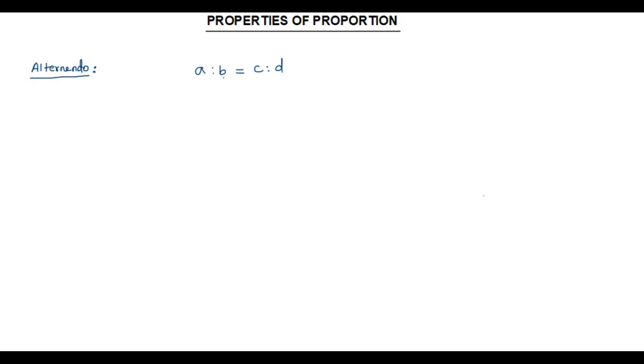Now what I'm going to do is switch the means. I mean, I'm going to interchange these two middle terms. Then I get a:c on the left side, b:d on the right side.